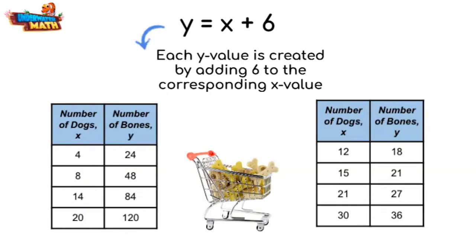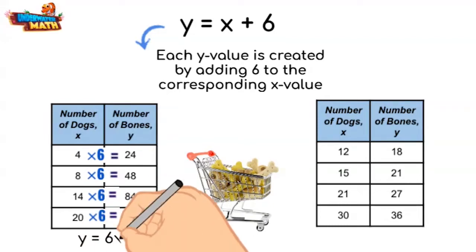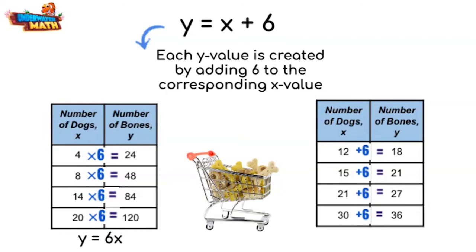Can you tell what the rule is instead? That's right, 6 is being multiplied to each x to determine y. This table follows the rule y = 6x. Let's be sure the second table matches our given rule. If we add 6 to each x-value, do we get our y-values? Well, doggone it, we do! Fabulous.